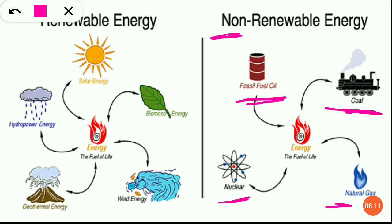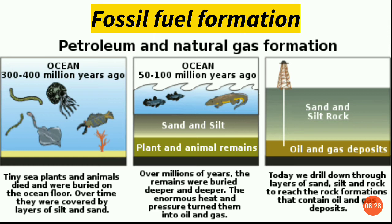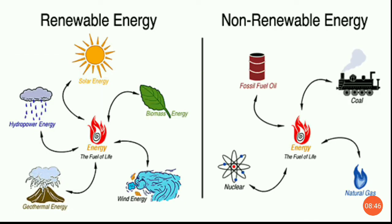Non-renewable — 'non' means no, 're' means again, 'new-able' means जिन्हें दोबारा new नहीं कर सकते। You cannot make them again. Once they are used, you can't form them again. As you saw in the previous image, it took 300 to 400 million years. An animal died, got buried, received proper heat and pressure — तब जाकर वो oil और gas deposits बने। So हम इन्हें renew नहीं कर सकते, इसलिए हमें इनका use कम से कम करना चाहिए।